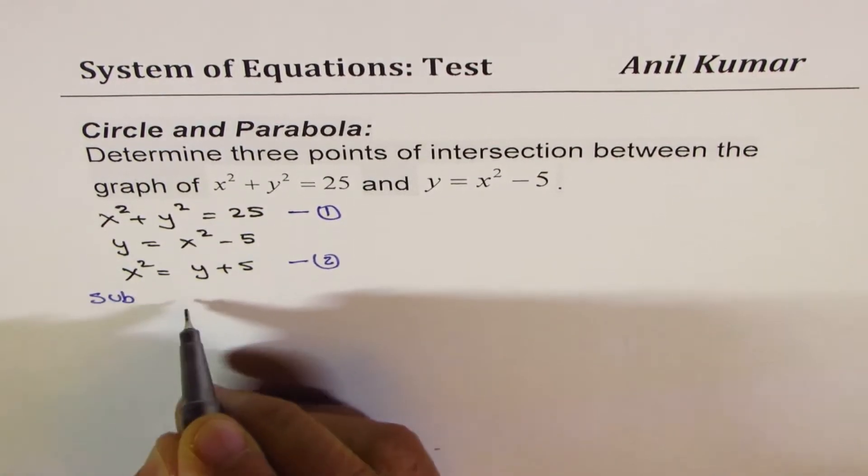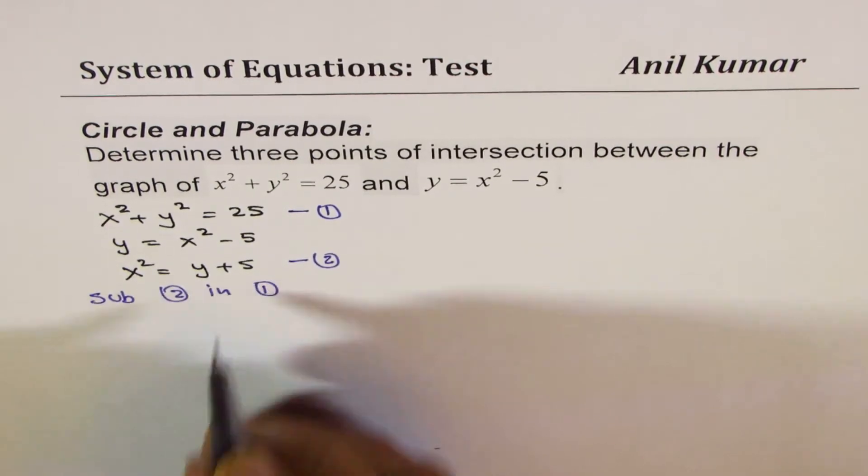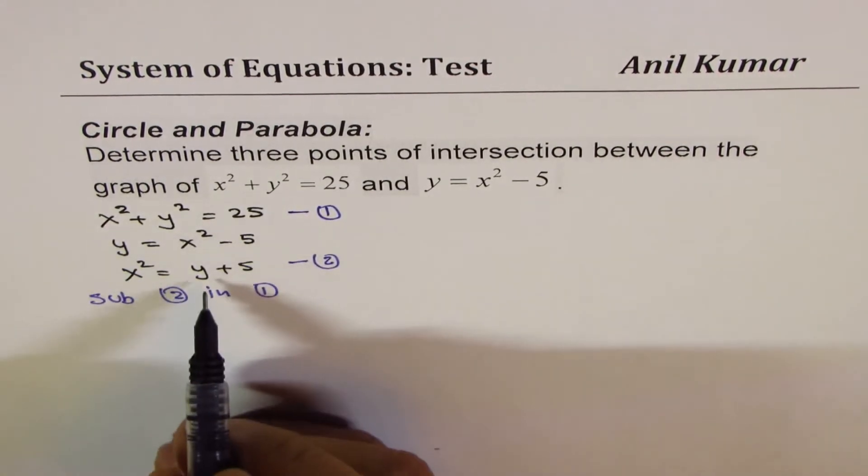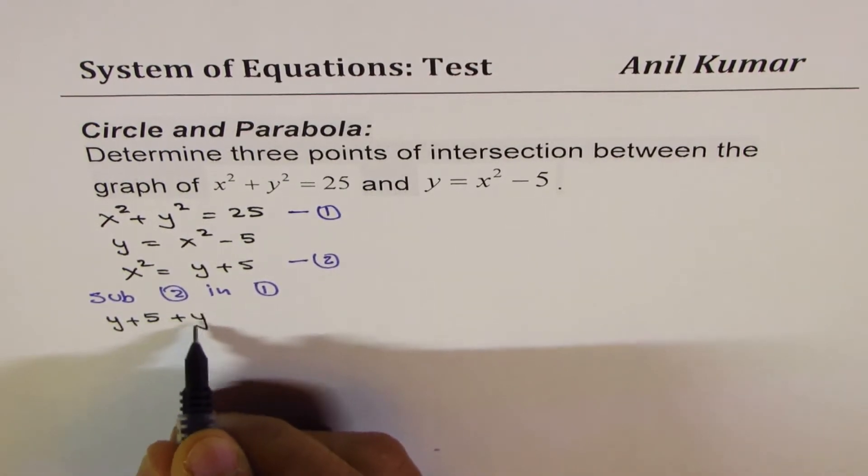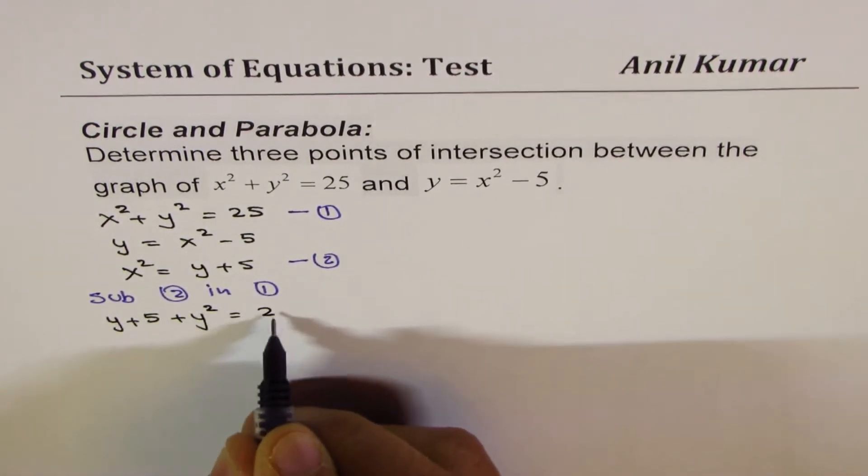So now we'll substitute equation 2 in equation 1. That is to say, we could write this as y plus 5 plus y squared equals 25.